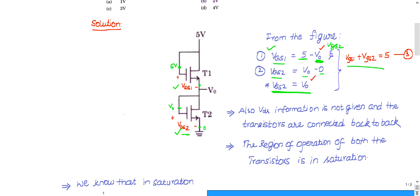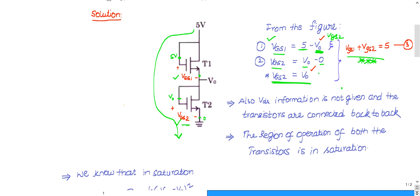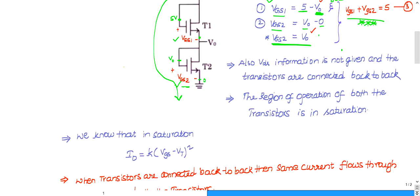Rearranging, we get the highlighted equation: VGS1 plus VGS2 equals 5 volts. This is the key equation I'll carry forward. You can also derive the same result by directly applying KVL from top to bottom.